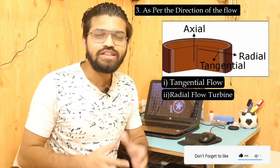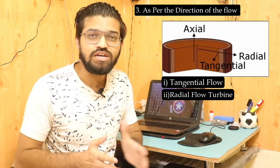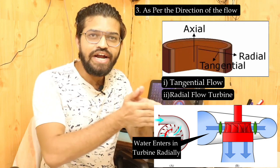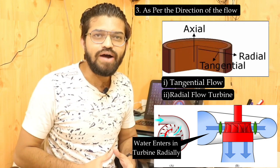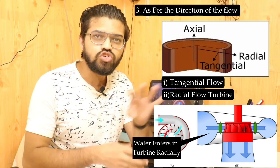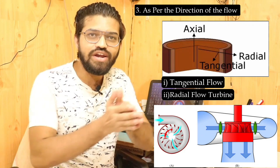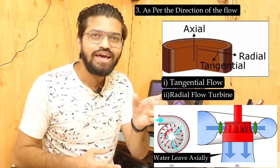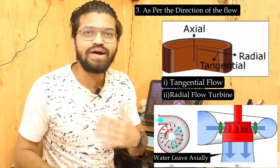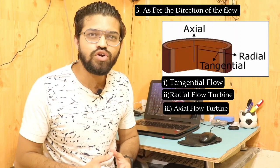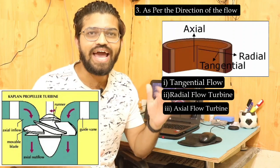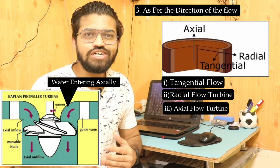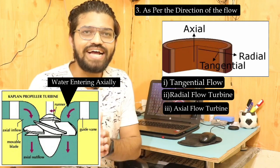The next is the radial flow turbine. In the radial flow turbine, water enters the turbine blades radially. As you can see in the Francis turbine, the water enters radially. However, in the Francis turbine, the water enters radially and leaves axially — so this can also be called a mixed flow type turbine. The next is the axial flow turbine. In the axial flow turbine, the water enters axially and leaves axially. In the Kaplan turbine, you can see that this condition is satisfied, so the Kaplan turbine is called an axial flow turbine.